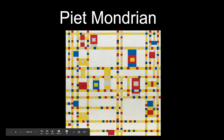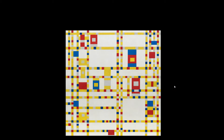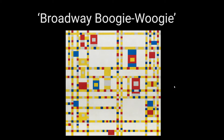Welcome back, everybody. Mr. Holmes here, going to talk to you about the Masterpiece of the Week. This week, we're talking about Piet Mondrian, another Dutch artist, and we're taking a look at this piece of his called — get ready for it — Broadway Boogie Woogie. Yeah, that's what's up.